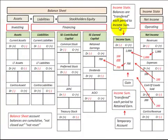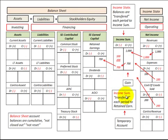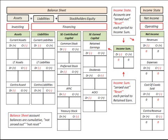The income statement balances are transferred to the income summary account, and the income summary account is then transferred to retained earnings. Income summary is a temporary account, and the revenues, expenses, and cost of goods sold are also temporary — or nominal — accounts because they get zeroed out and closed at the end of the year. So after closing, and for the start of the new year, all those T-accounts — revenues, expenses, cost of goods sold, and income summary — have a zero balance.